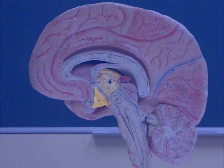Just below the thalamus and just anterior, we find the hypothalamus, which is a structure involved in fundamental functions crucial to the survival of the individual and the species, such as thermoregulation, hunger, thirst, and reproduction.